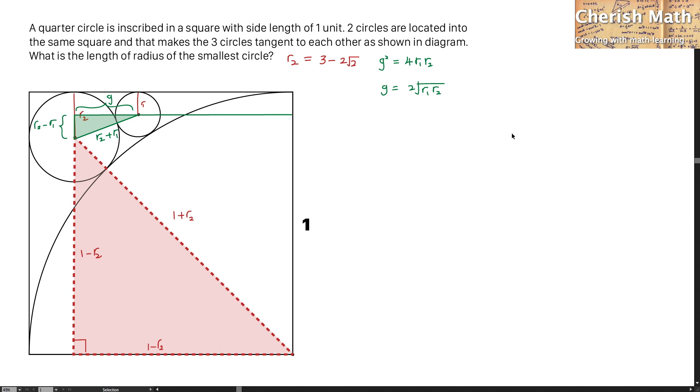I'm now going to draw the third triangle in blue color. And it is in the right angle. To label it, this length is the hypotenuse. And it is 1 plus R1. The vertical length here is going to be 1 minus R1. And for this horizontal, it is 1 minus R2 minus G.